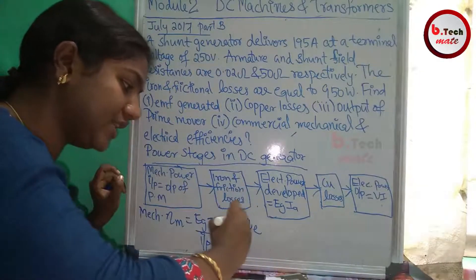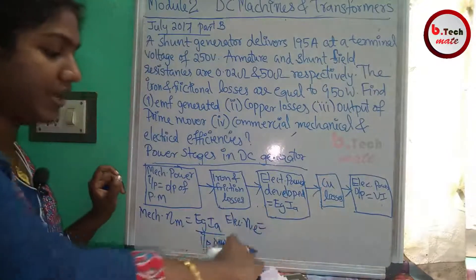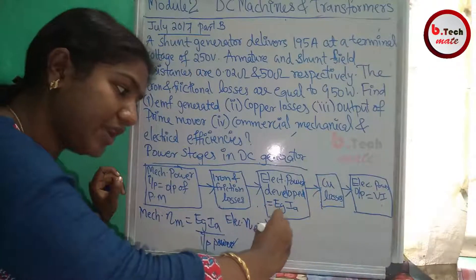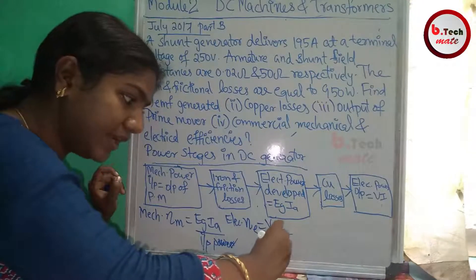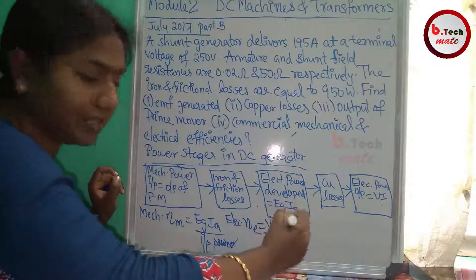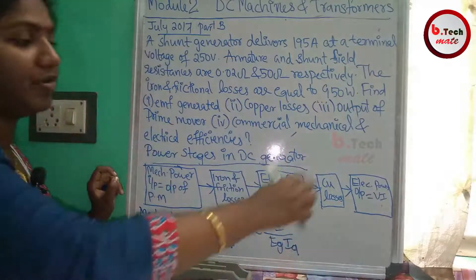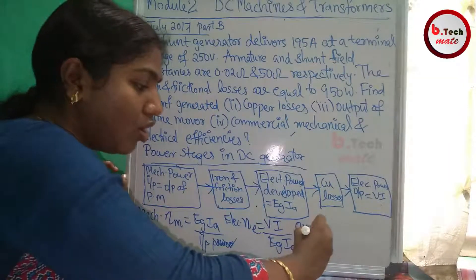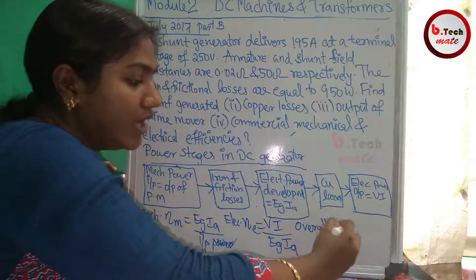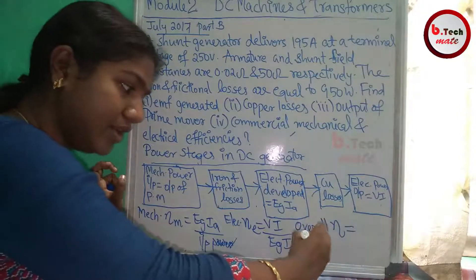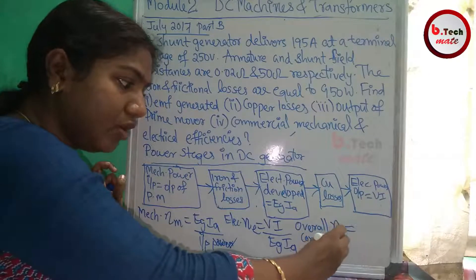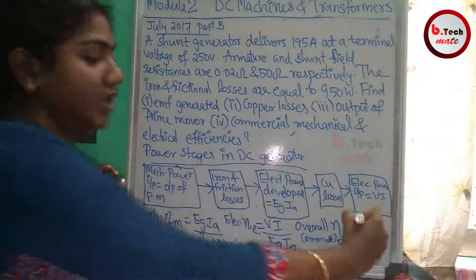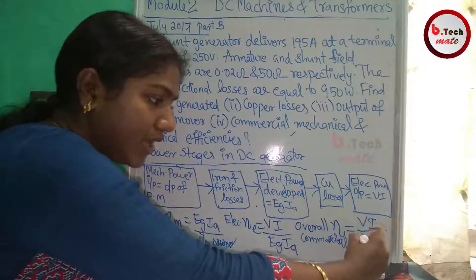Electrical efficiency is EtaE, which equals electrical output divided by EgIa. The overall efficiency is commercial efficiency, defined as the final output divided by the first input — that is VI divided by mechanical input power.